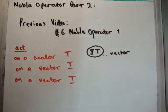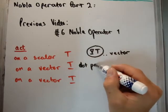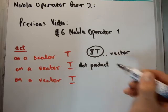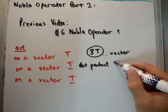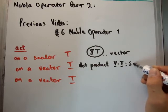You can also act on a vector using the dot product, the dot or the scalar product. And that's going to give us back a scalar, so you're going to get the Nabla operator dotted with T and that gives us a scalar.